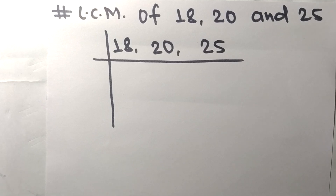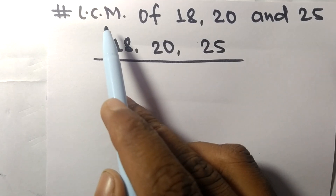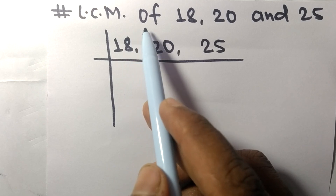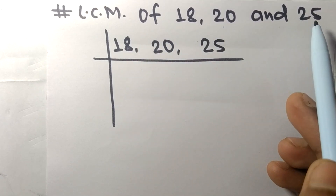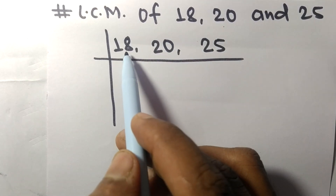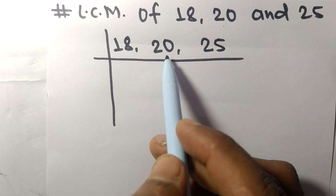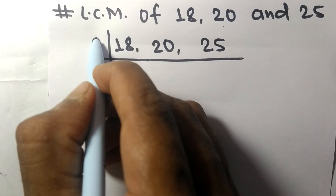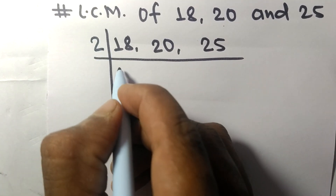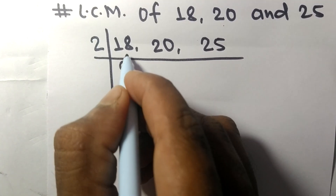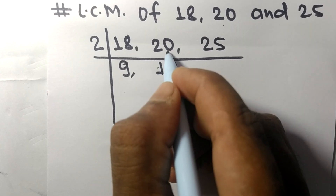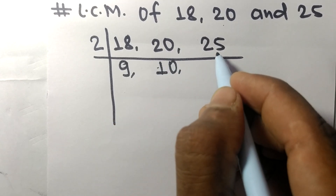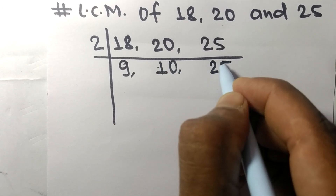Today we shall learn to find the LCM of 18, 20, and 25. 18 and 20 are divisible by 2, so 2 times 9 is 18, 2 times 10 is 20. 25 is not divisible by 2, so it stays the same.